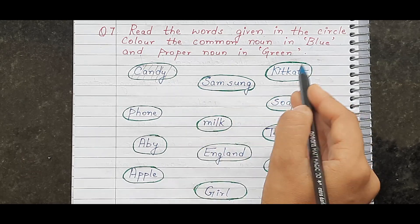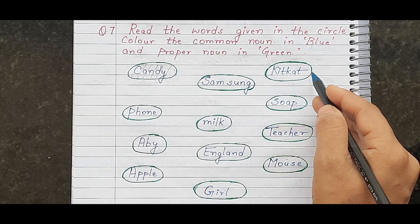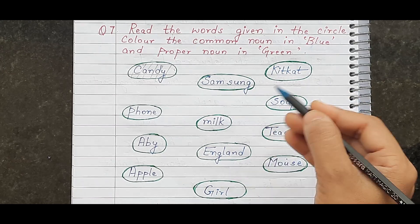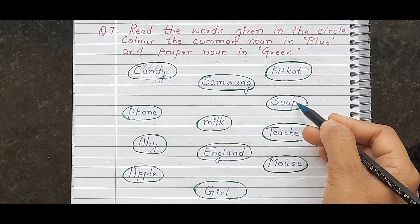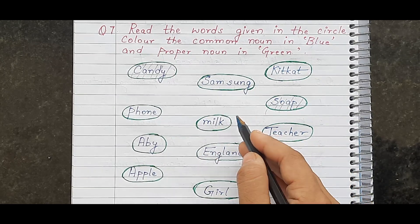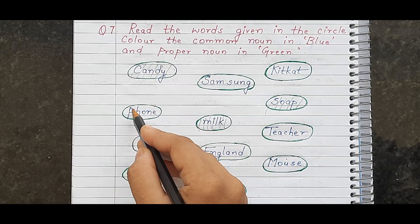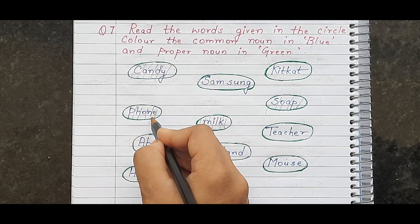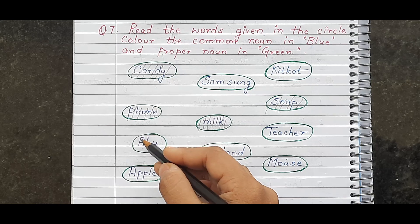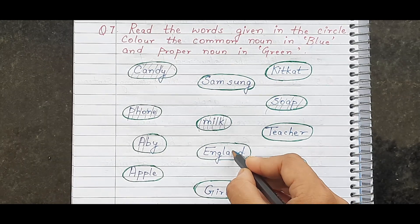KitKat is a specific brand name, so it is a proper noun — color it green. 'Soap' — soap is a common noun, so color it blue. 'Milk' — milk is a common noun, so color it blue. 'Phone' — we don't know which specific phone, so this is a common noun — color it blue. 'Abby' — this is a specific person's name, so it is a proper noun — color it green. 'England' — this is a specific country, so it is a proper noun — color it green.